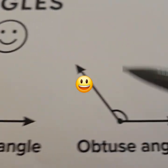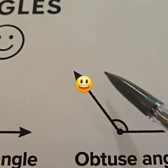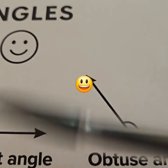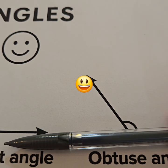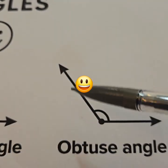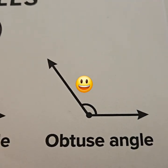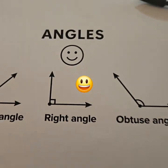is bigger than 90 degrees, all the way up to but not including a straight line — that would be called an obtuse angle.